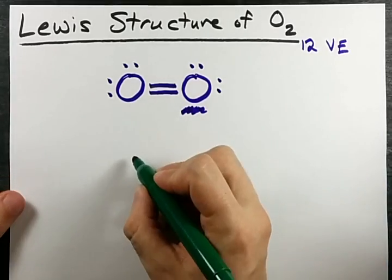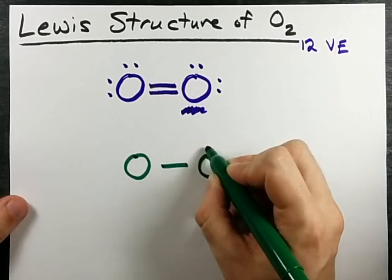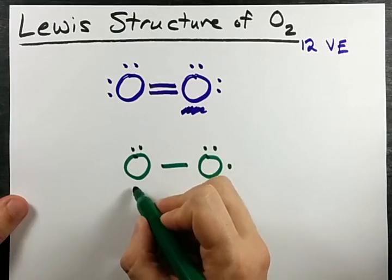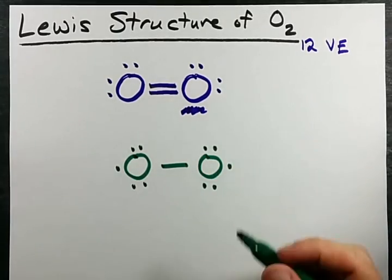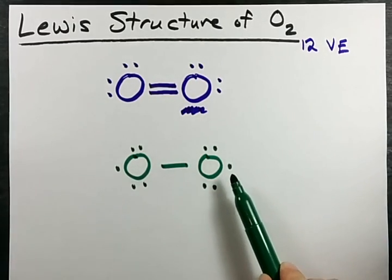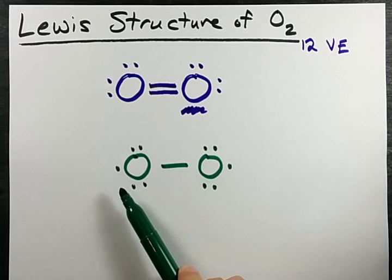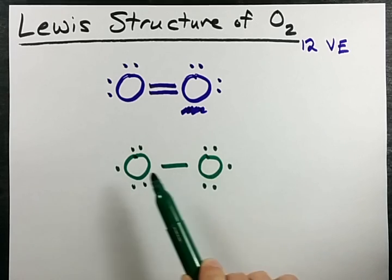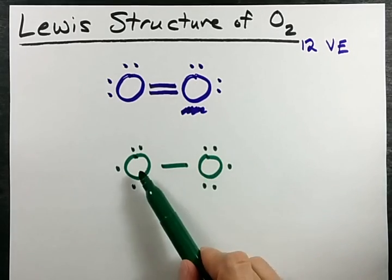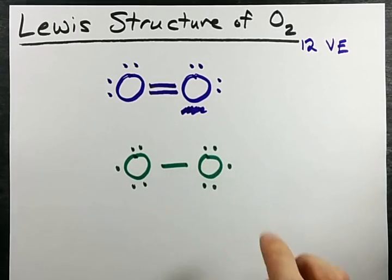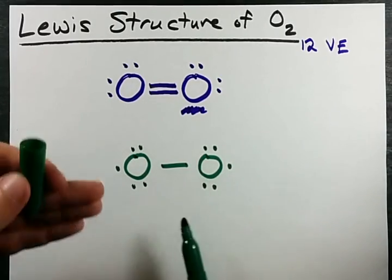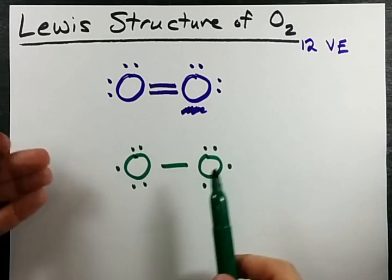I do want to point out that some places online like to show the Lewis structure of O2 like this. Now, if you're just starting to learn Lewis structures, you're never, ever, ever going to have single electrons on their own. These are called radicals. They're more unstable than paired electrons. But this is also an acceptable Lewis structure if you understand the inner workings of the atom, how they react, etc.